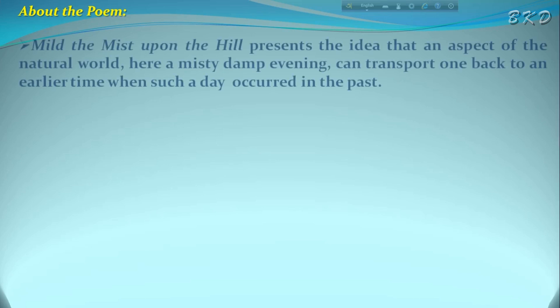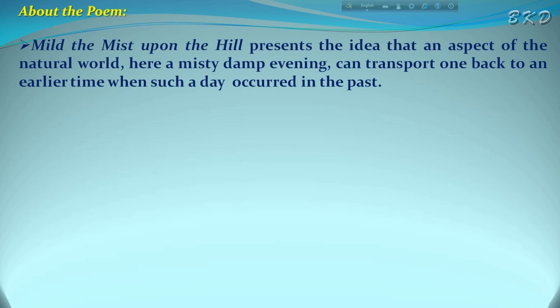Before we read the poem, let's know something about its theme. 'Mild the Mist Upon the Hill' presents the idea that an aspect of the natural world — here, a misty, damp evening — can transport one back to an earlier time when such a day occurred in the past.